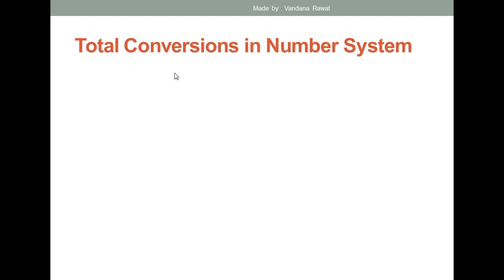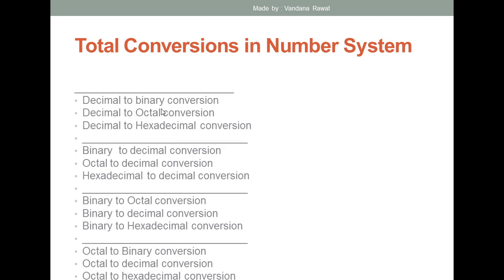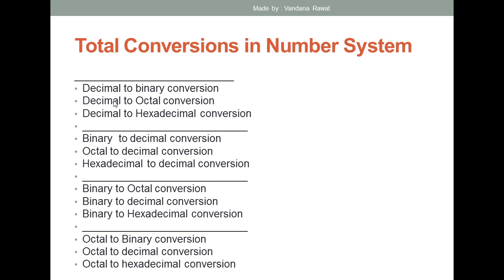Before going into that subtopic, let's look at how many total conversions we have in number systems, so you don't get confused. First we have decimal to binary conversion, then decimal to octal conversion, decimal to hexadecimal conversion, then binary to decimal, octal to decimal, and hexadecimal to decimal — these are the vice versa conversions.